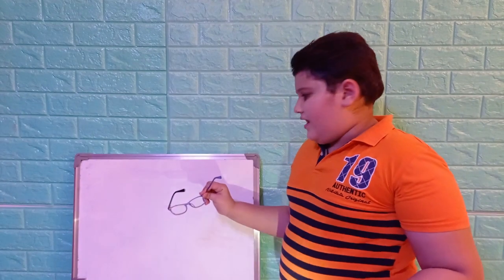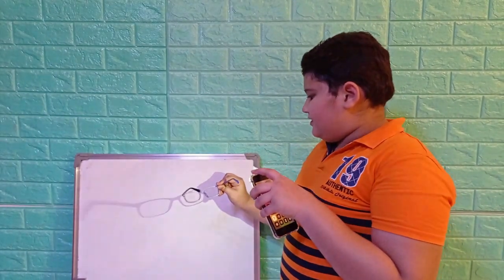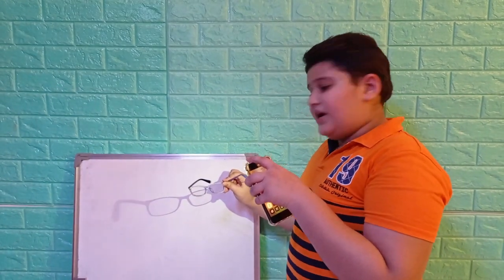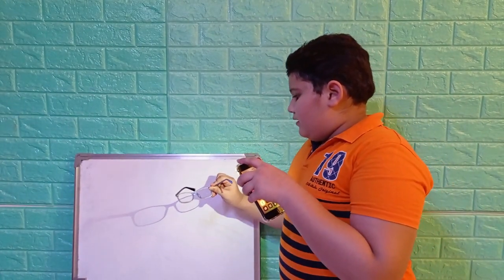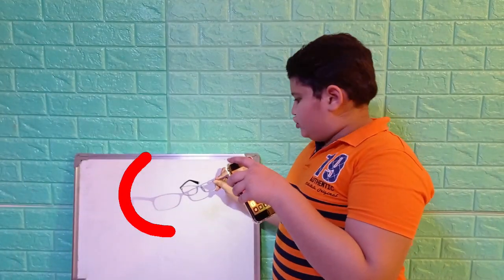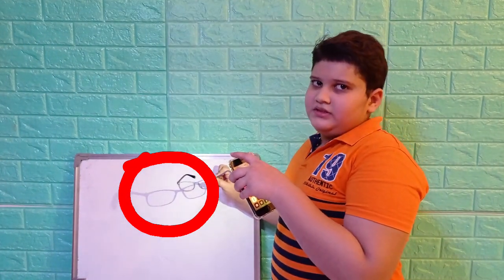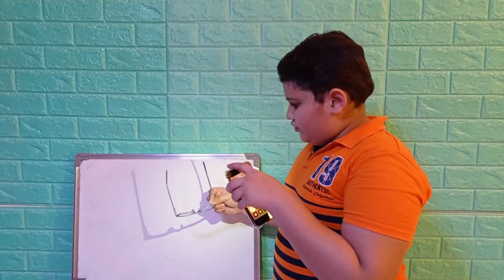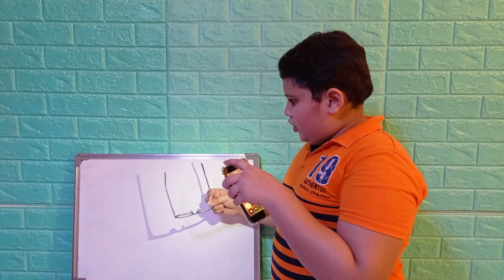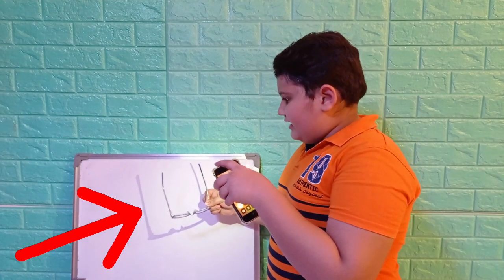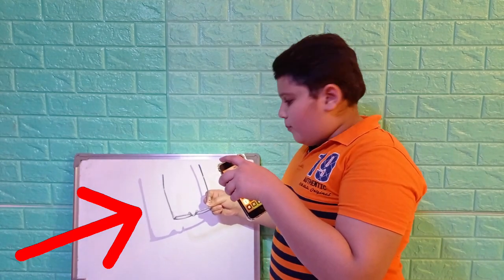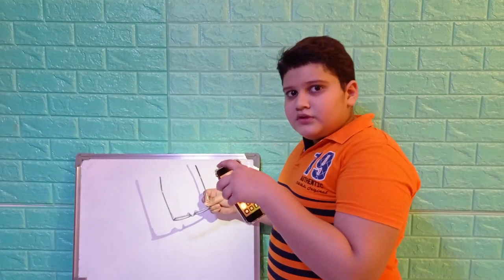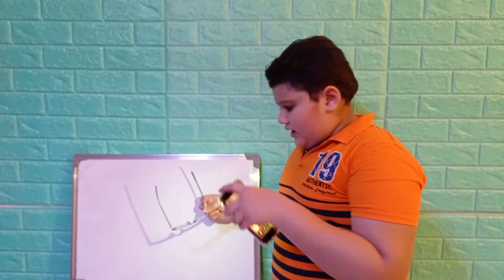I will make a shadow of my glasses. You can see that the lens makes no shadow — that means it lets all the light go through it and blocks no light. Now I will make a shadow of the frame. You can see that it blocks all the light and it has a dark shadow. That means opaque objects form a shadow and block all the light.